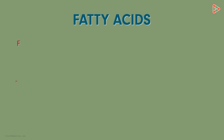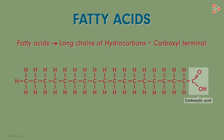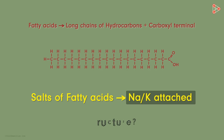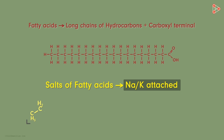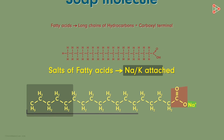Fatty acids are extremely long chains of hydrocarbons with a carboxylic acid attached at one terminal. Now since soaps are salts of fatty acids, they have sodium or potassium attached to the chain. A long chain of hydrocarbons, which can be saturated or unsaturated, and the chain will have a carboxyl terminal and sodium or potassium attached to it. The structure of a typical soap appears somewhat like this.